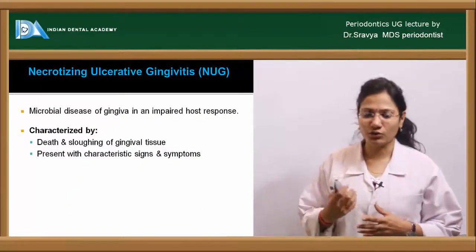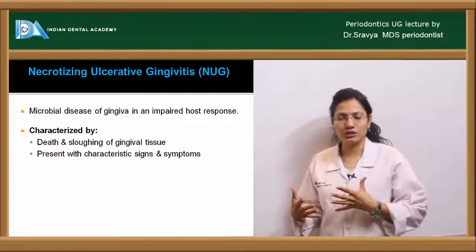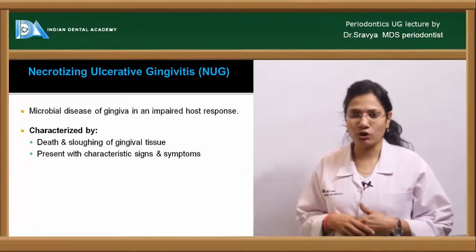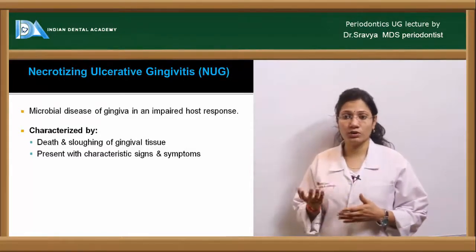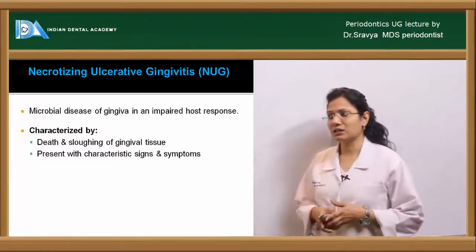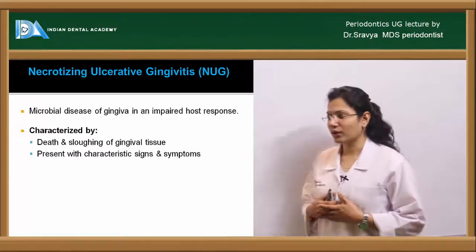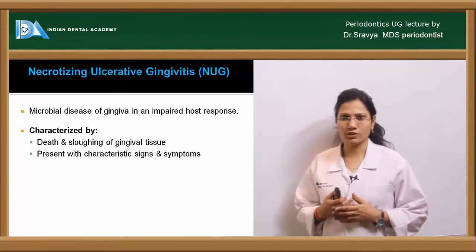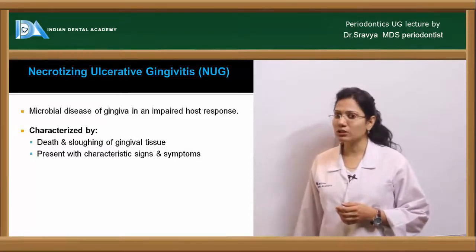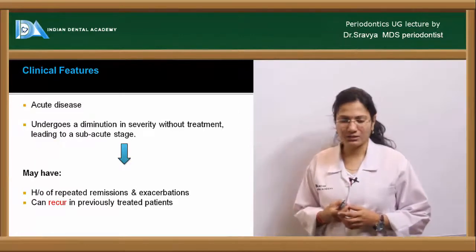Necrotizing ulcerative gingivitis: as the term indicates, there is necrosis, ulceration, and involvement of the gingiva. These patients might have pre-existing gingivitis as a contributing factor, combined with a compromised host immune response. It is basically a microbial disease of the gingiva in an impaired host response, characterized by death and sloughing of gingival tissue, presenting with characteristic signs and symptoms.